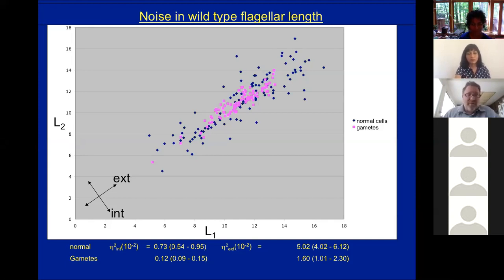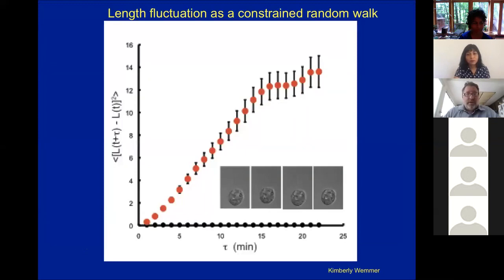So one thing that comes out right away, for example, is that gametes, which are a kind of cell specialized for mating where basically two cells come together and touch by the tips of their flagella. And that only works if the flagella are equal in length. And we see in gametes, we see a decreased intrinsic variation, meaning that the cells tend to have flagella that are more equal in length, as they would require for their function.